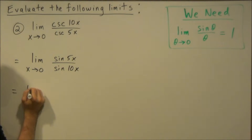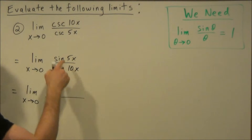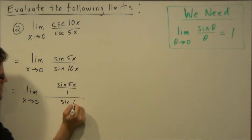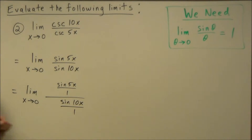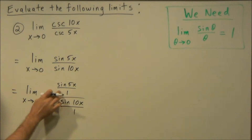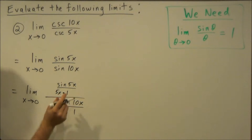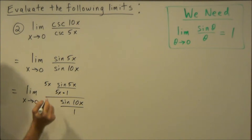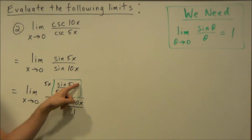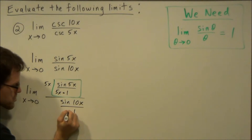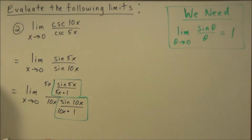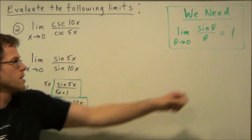We write this as sine five x over one divided by sine ten x over one, because we want to use the formula again and need a match between numerator and denominator. For the top part we multiply by five x over five x, giving us sine theta over theta with a match. By the same reasoning, we multiply the bottom fraction by ten x over ten x. Both green sections will go to one.